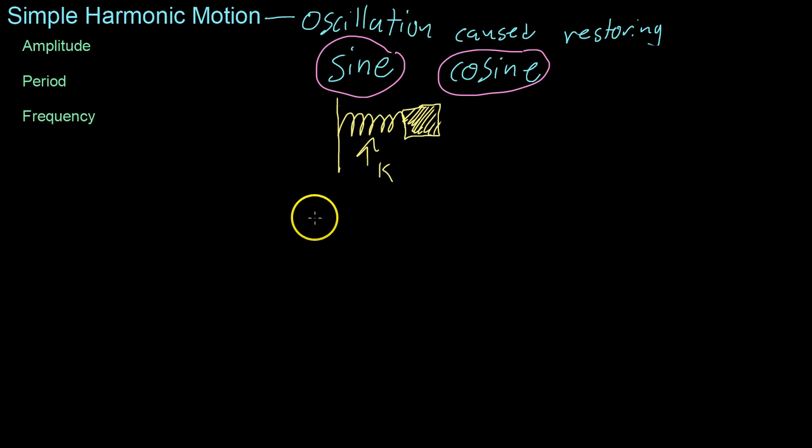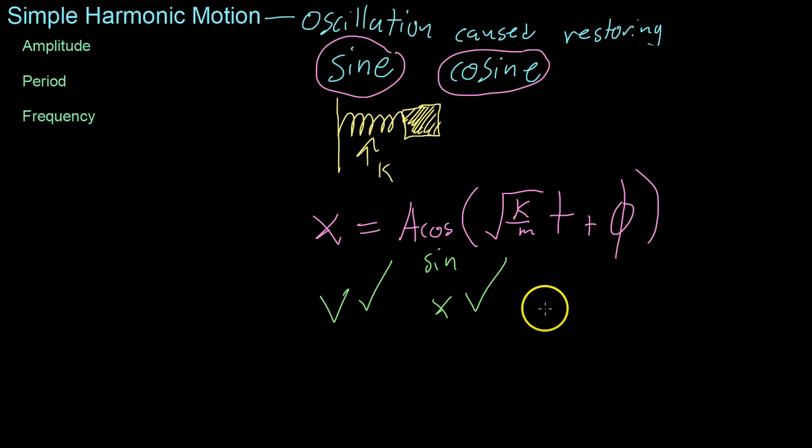So based on this information, we can generalize the equation to be x equals A cosine of root k over m times t plus some initial angle phi. And you can do the same thing, except replacing cosine instead with sine. Now, an interesting consequence of this equation is that because we can derive this and get the velocity, we'll have two equations with two unknowns, the time and the amplitude. And at any point, if we know both the velocity as well as the x position, we can determine the entire motion for an object.